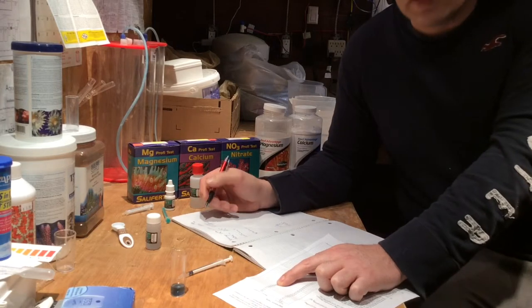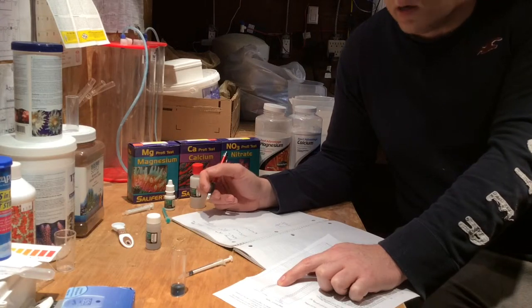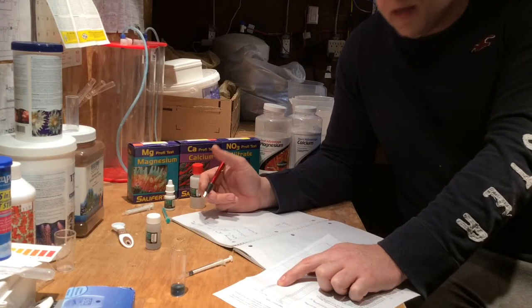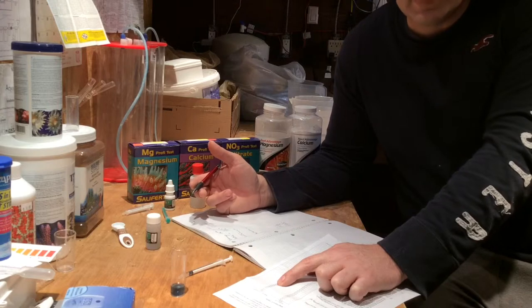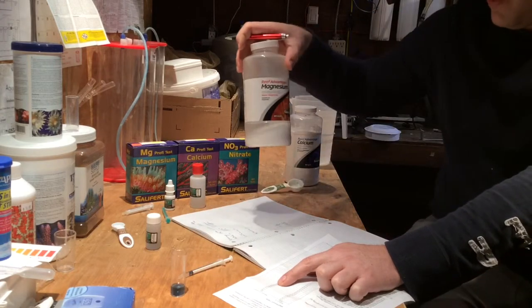So now that I'm looking at this, I know it's low. It should be between 1,350 ppm, just like the ocean water. So I have to at least, if I want to get it over, at least add 10 milliliters of Reef Advantage Magnesium.